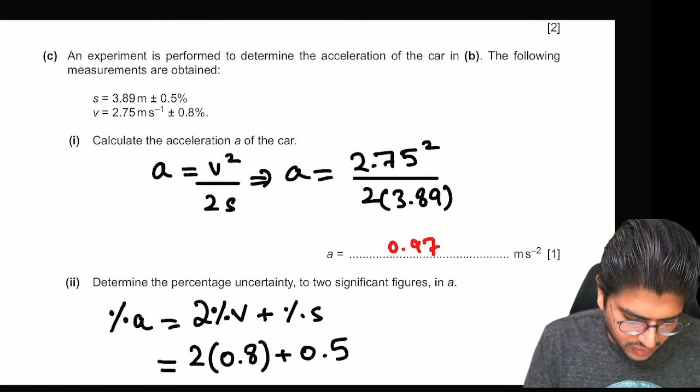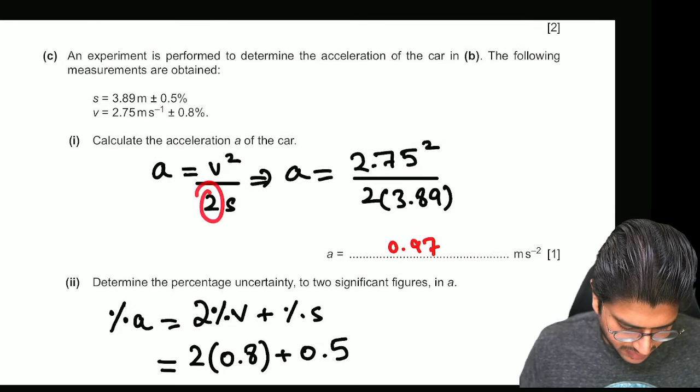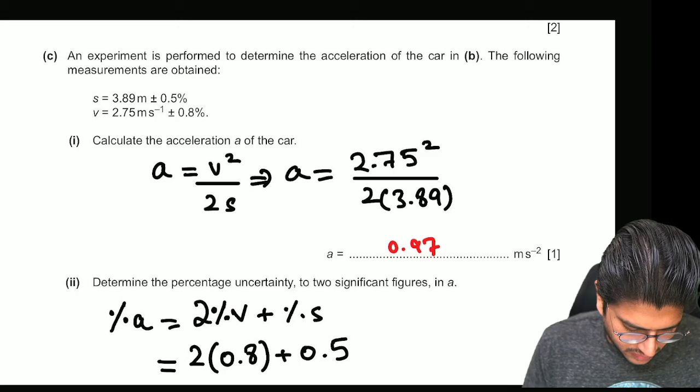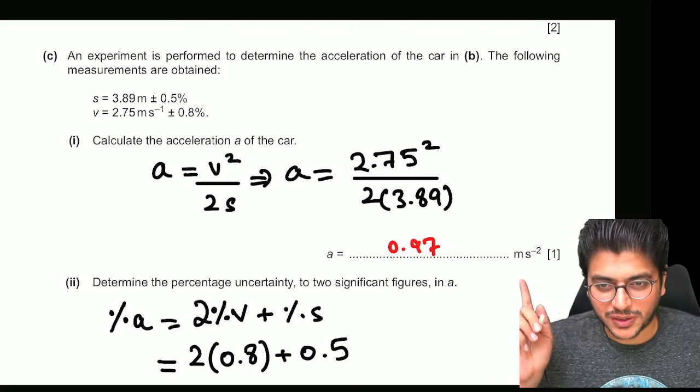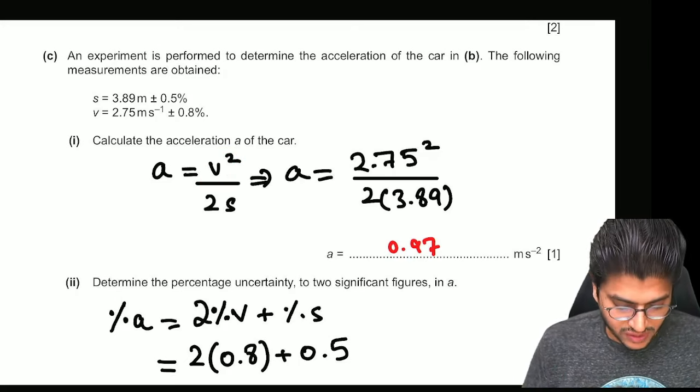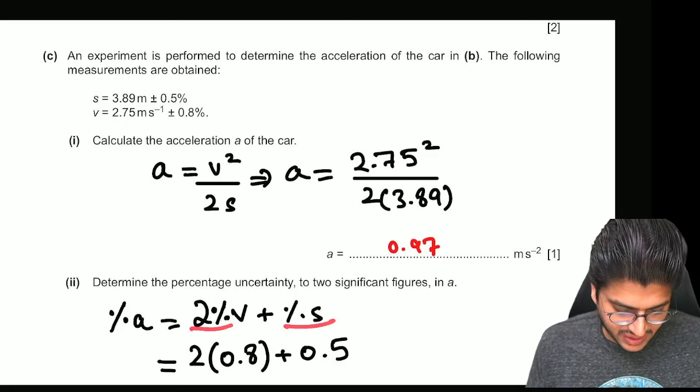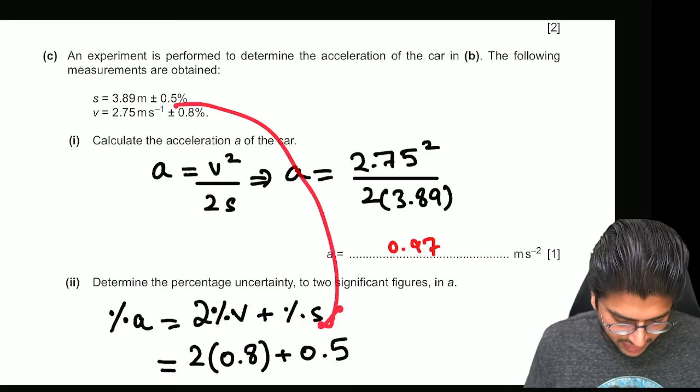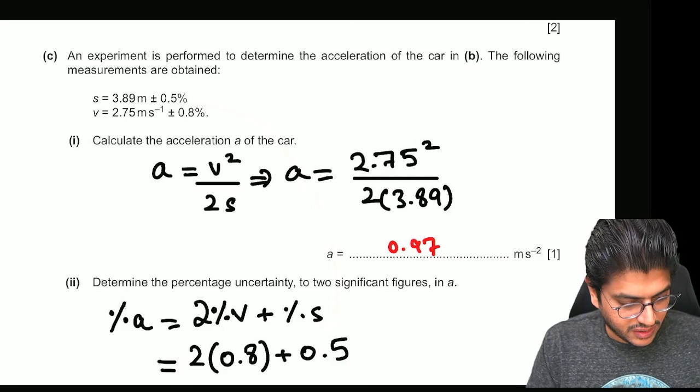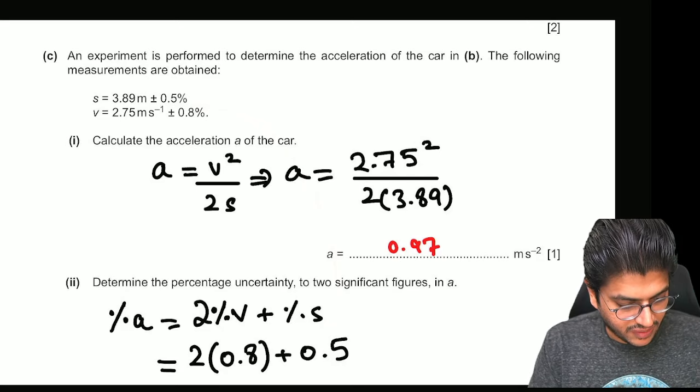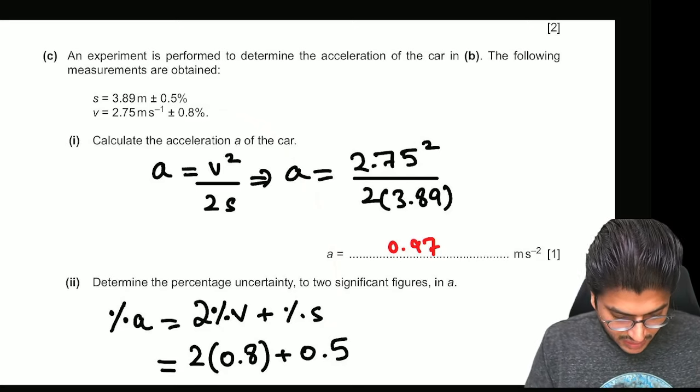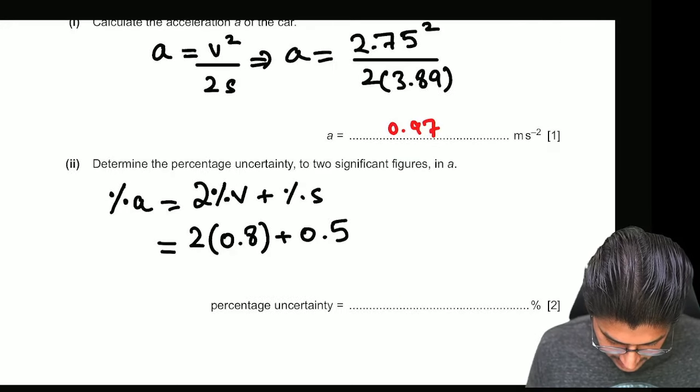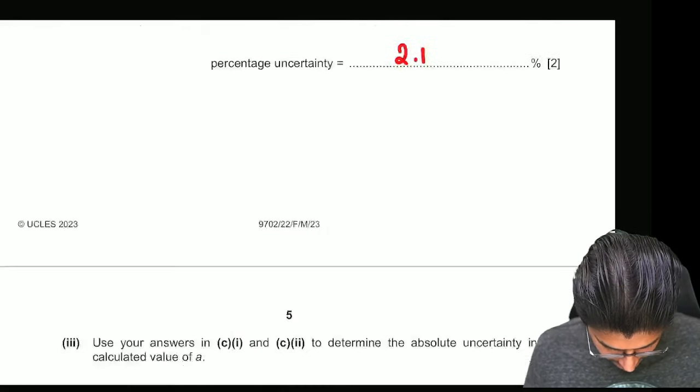Calculate the percent uncertainty. You know in percent uncertainties the constants can be ignored. So V square. What does that mean? You did this earlier. V square means V into V. So V is coming twice. So it's going to be 2 percentage V plus percentage S. Percentage V is 0.8 and percentage S is 0.5. So 2 into 0.8 plus 0.5. And your answer to this is percentage A is 2.1%.